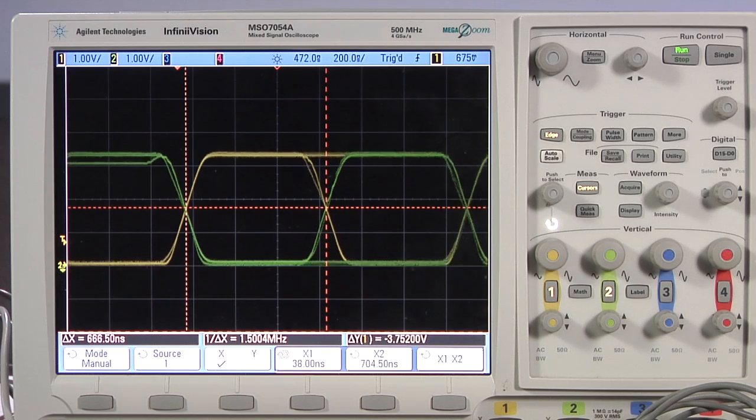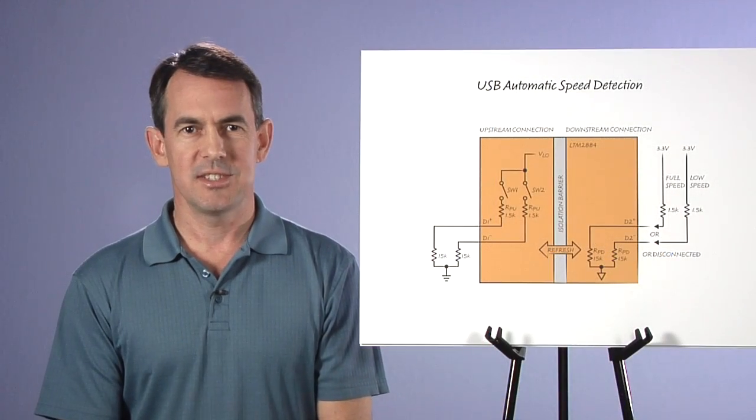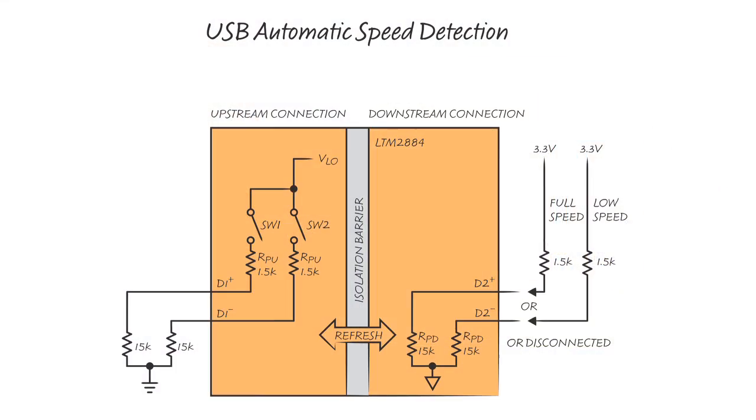The mouse is a low-speed device, which the LTM2884 has detected and auto-configured for 1.5 megabit per second operation. The data transfer is displayed on the connected oscilloscope. Automatic speed detection is a key feature of LTM2884, and this diagram illustrates how standard USB pull-up resistors define the speed. D-minus is pulled high to define low speed, or D-plus is pulled high for full speed. LTM2884 detects the resistor during bus idle time communication and mirrors the connection to the host side with internal resistors and integrated switches.